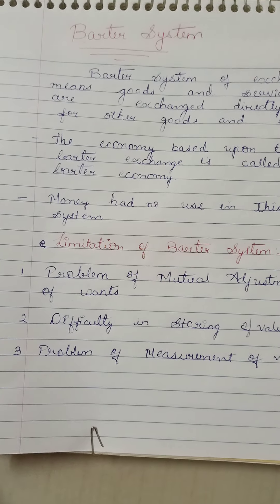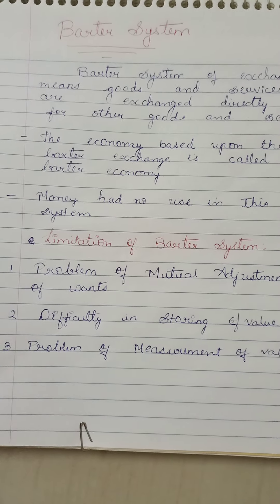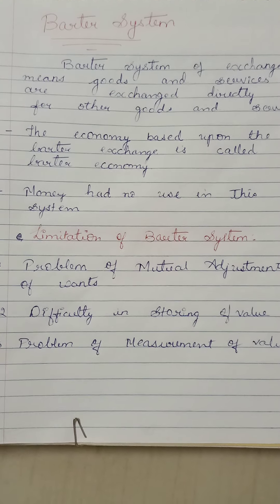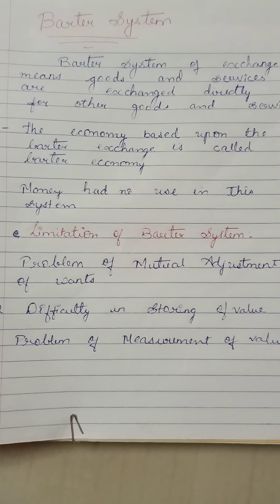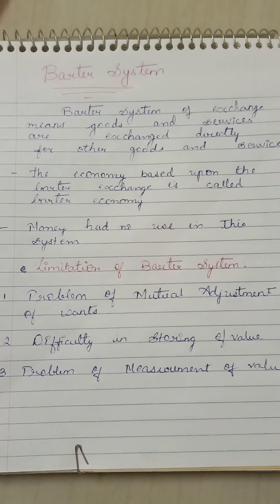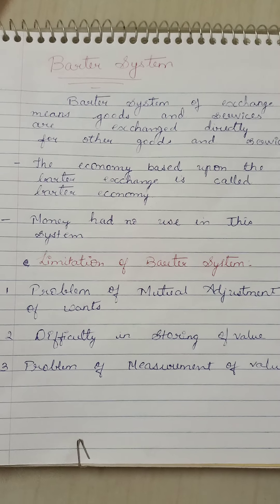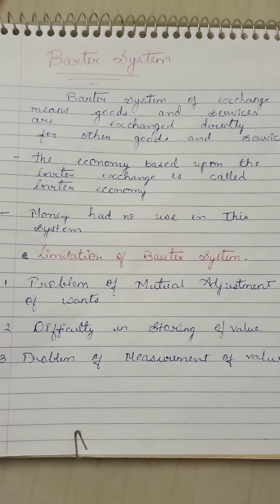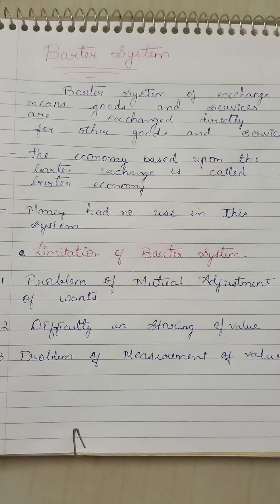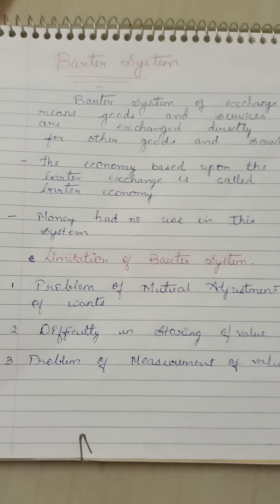For example, a farmer cultivating crops would exchange a few portions of it with a weaver for buying clothes, and then with a cobbler for buying shoes. In this way, goods started getting exchanged in an easy way. However, the barter system could not fulfill the extra increasing need for exchange of goods, as humans have unlimited wants, and these increasing demands cannot be fulfilled by the barter system.